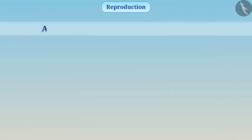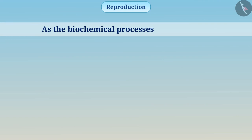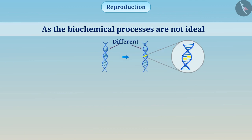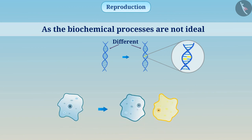As the biochemical processes are not ideal, we can see some differences between the replicated DNA and the parent DNA. Because of these variations, every organism in the population has some unique features which makes it distinct in the population. We call it diversity.